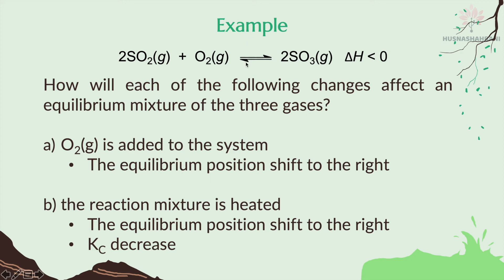B: The reaction mixture is heated. Here, delta H is less than zero, meaning it is negative — the forward reaction is exothermic and the reverse reaction is endothermic. When the reaction mixture is heated, you add more heat to the system, so you need to absorb that heat again to restore equilibrium. Therefore, the endothermic (reverse) reaction occurs, and the equilibrium position shifts to the left. The Kc decreases.